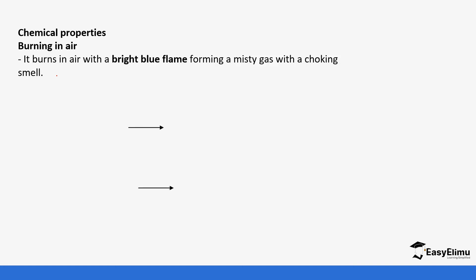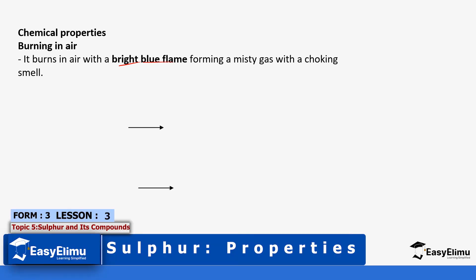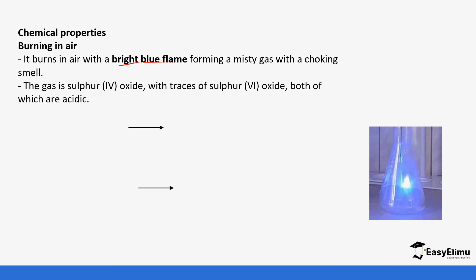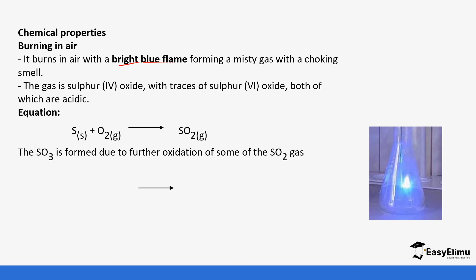When you burn sulfur in air, it burns with a bright blue flame to form a choking gas. Sulfur reacts with oxygen to form sulfur dioxide (SO₂), and there are also some traces of sulfur trioxide (SO₃). The reason for traces of SO₃ is because of the oxidation of sulfur dioxide. Both of these gases are very acidic, which is why they have a choking feel.